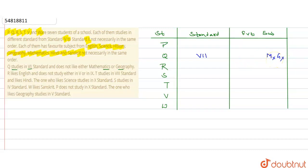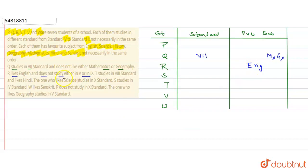Next, हमें given है: R likes English and does not study either in 5th or in 9th. R को English पसंद है, तो R की subject column में English आएगा. और ये 5th या 9th में नहीं है — 5th लिखकर काटा मार देंगे और 9th लिखकर भी काटा मार देंगे.